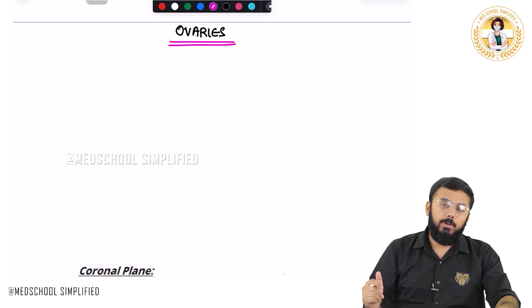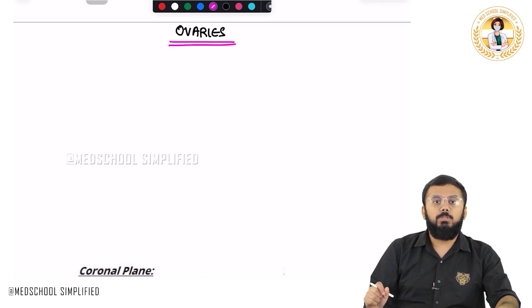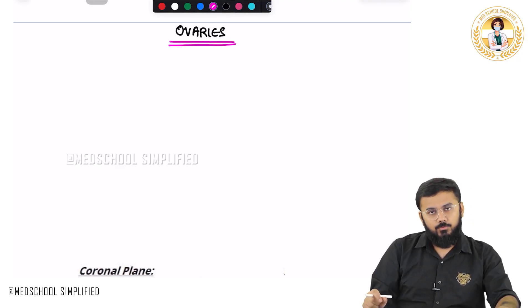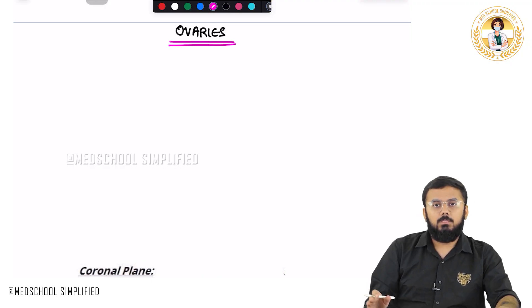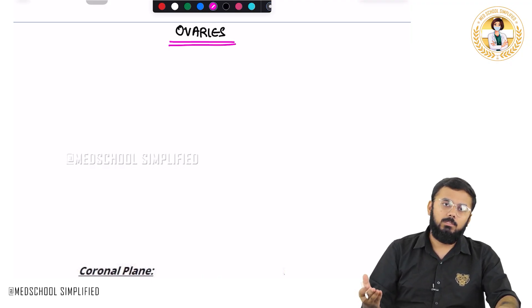If you look at the developmental process, we have got something called as mesonephros. So from this mesonephros only, the ovaries as well as the male gonads — both of them develop.